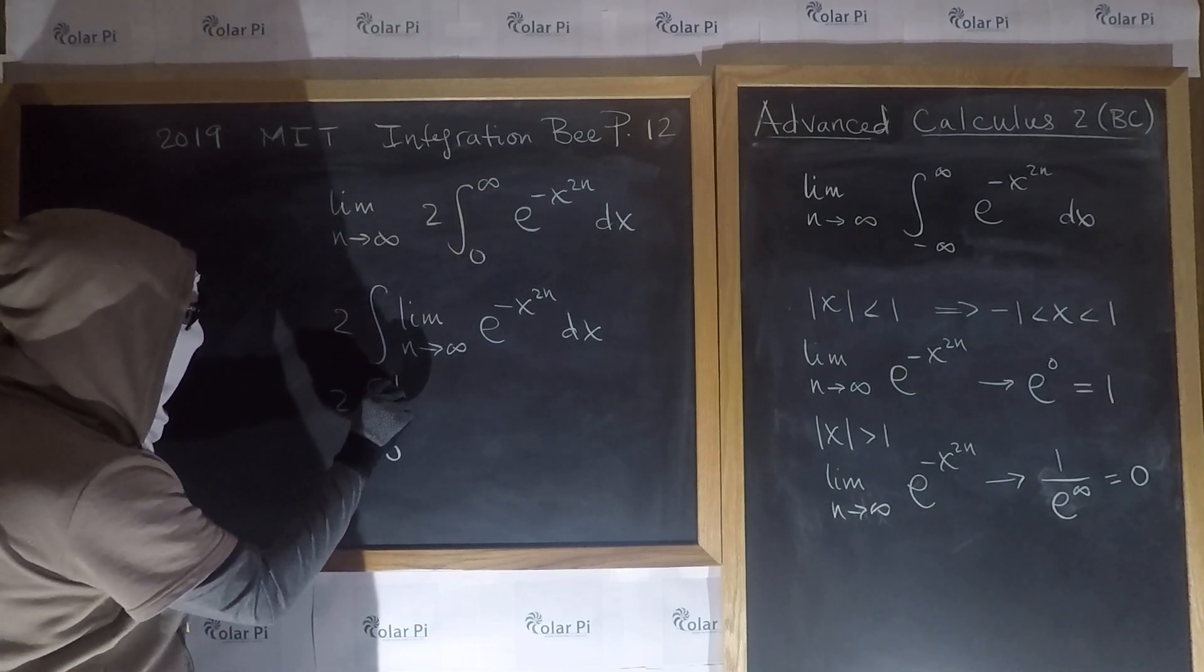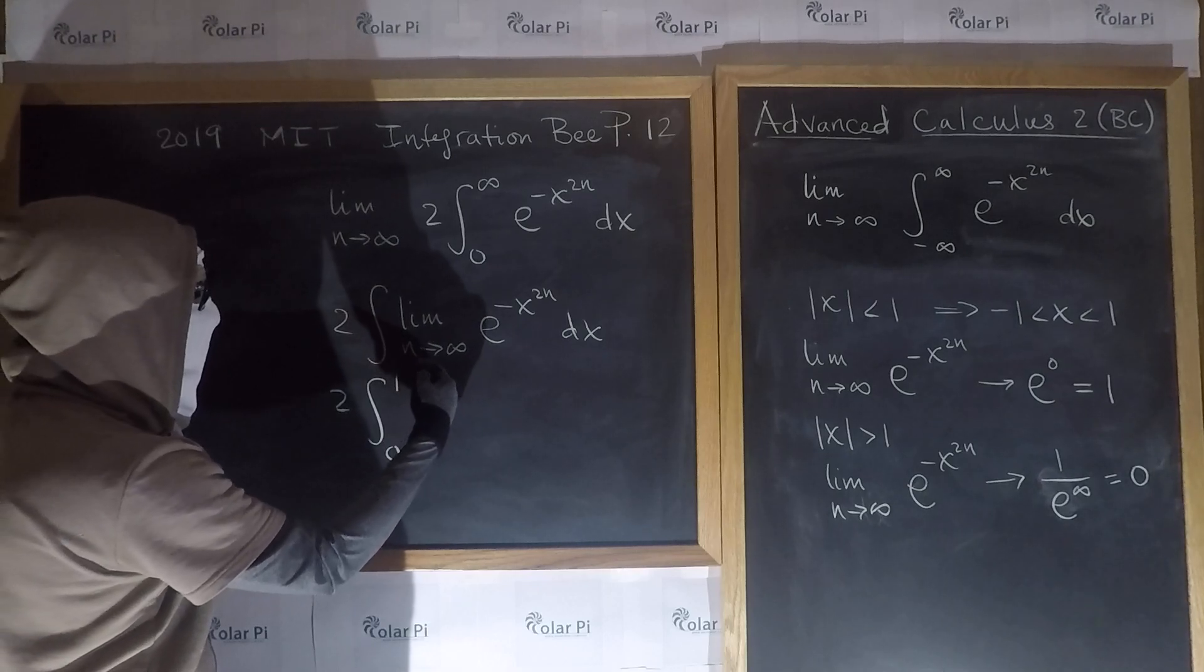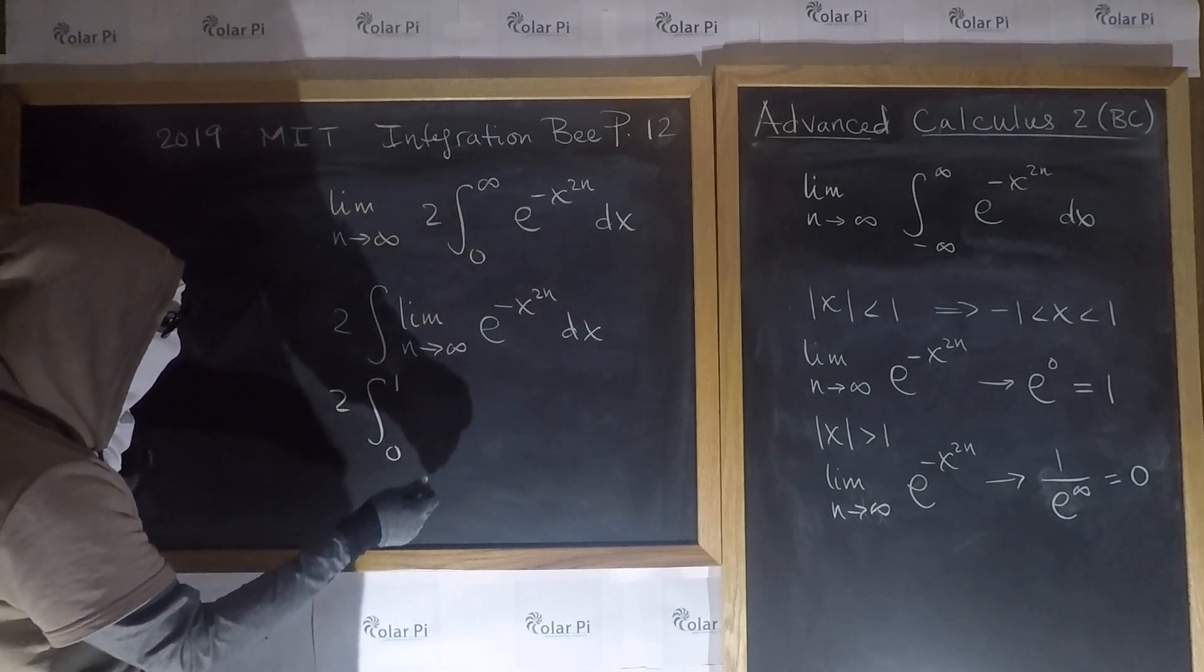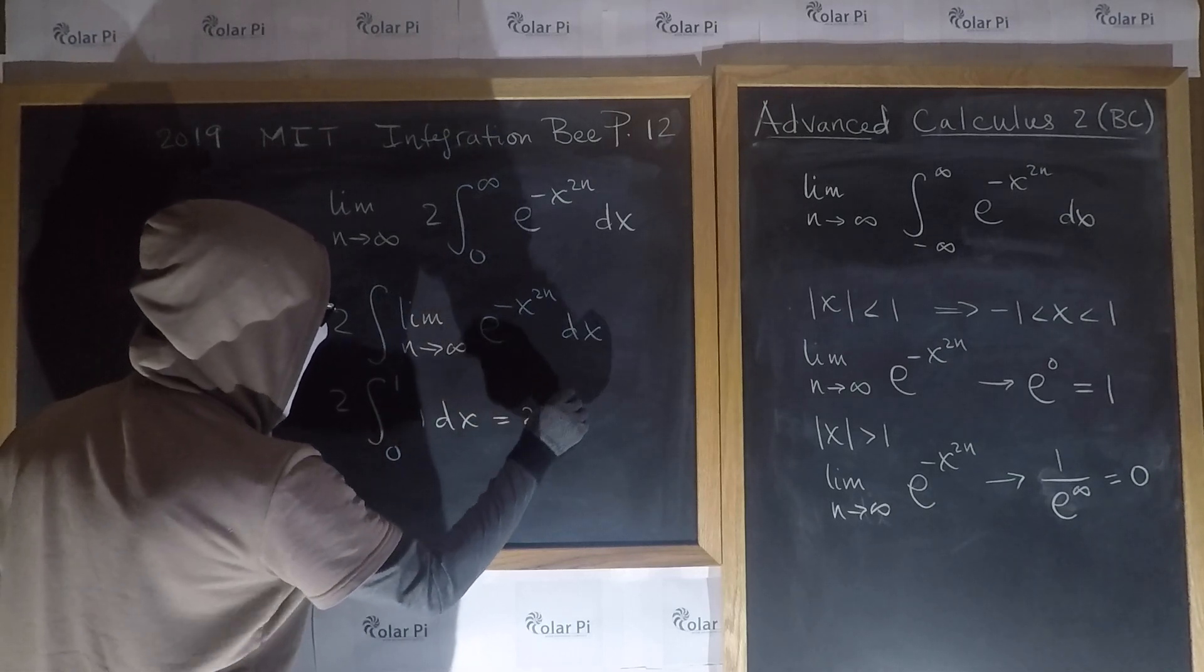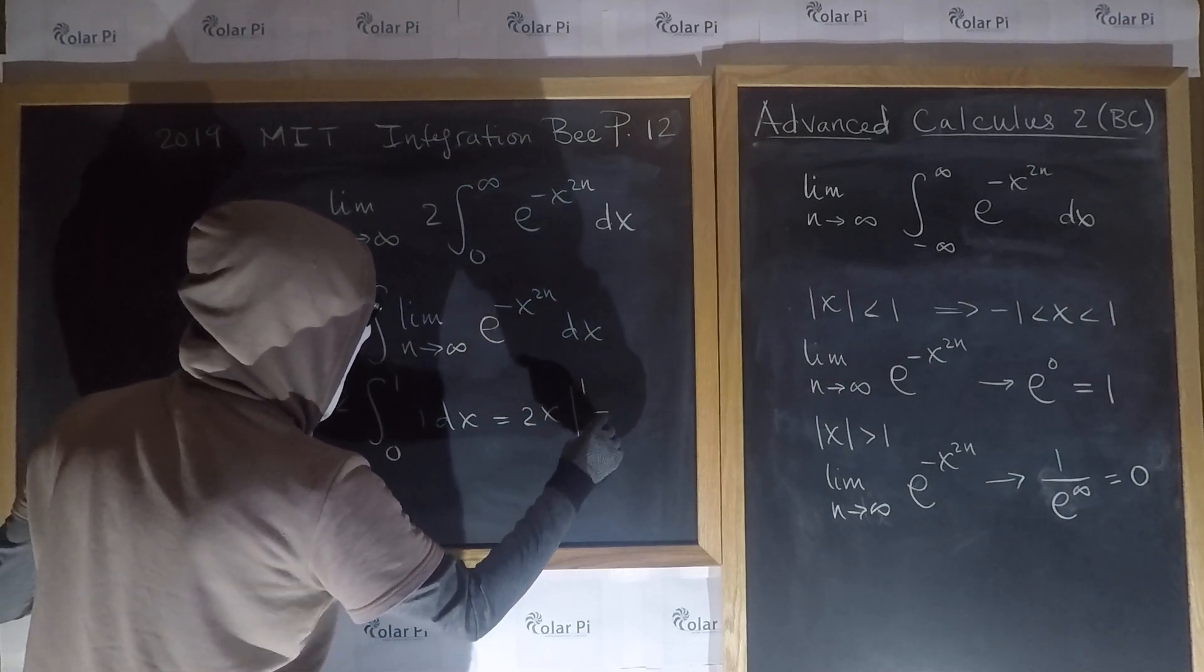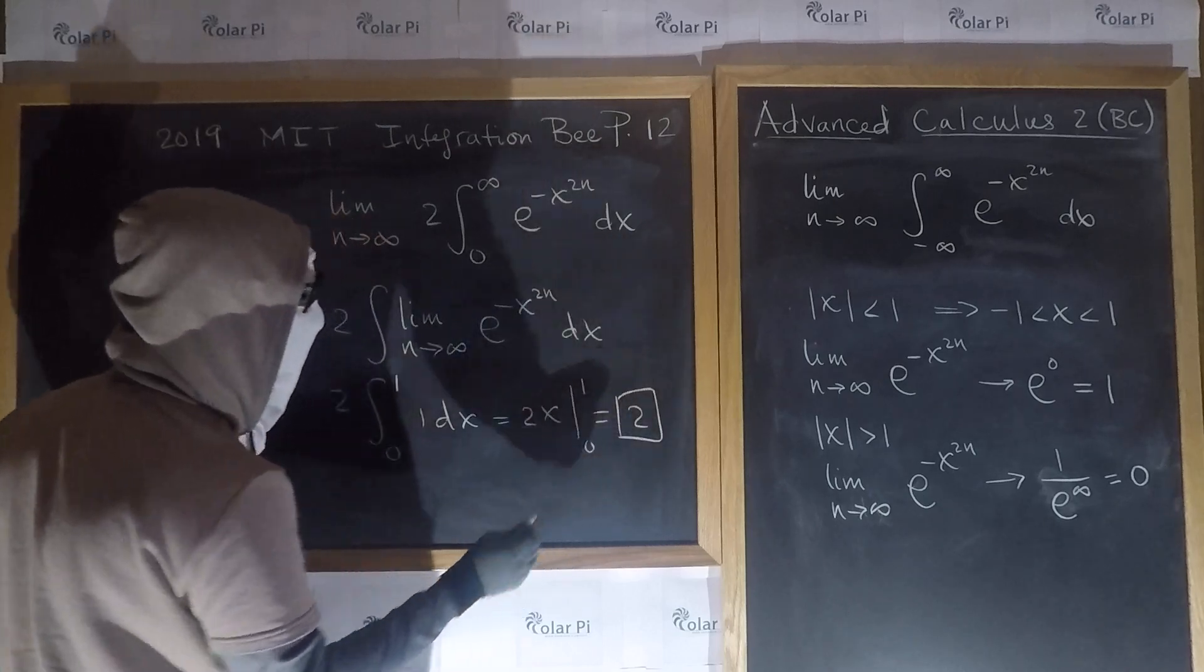So, double, x's 0 to 1, and then we said that for such x's, this here is equal to 1. So you get 1 dx, which is equal to 2x from 0 to 1, which is 2.